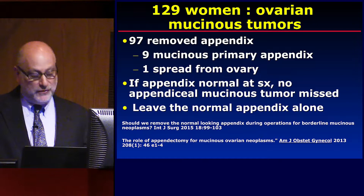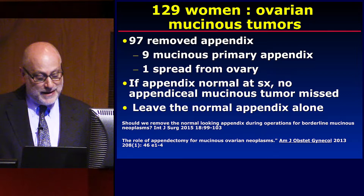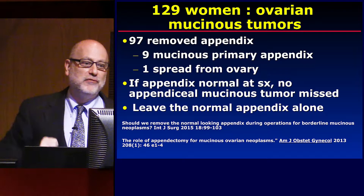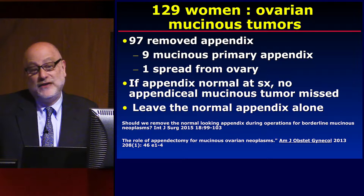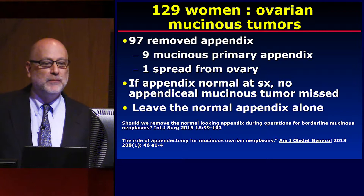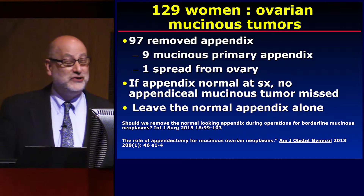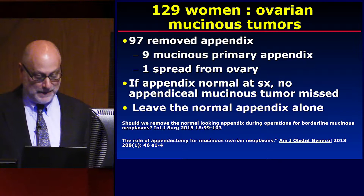This is an important article: 129 women had mucinous ovarian tumors. 97 had their appendix removed. Of the 10 that had tumors in both locations, 9 had the primary in the appendix. But their conclusion: the appendix is normal at surgery — no mucinous appendix was missed. There are two areas where we can help these patients: radiologists reviewing imaging studies prior to removal of ovarian neoplasms must make sure the appendix is okay, and gynecologic oncologists are well educated to look for the appendix to make sure it doesn't get missed.